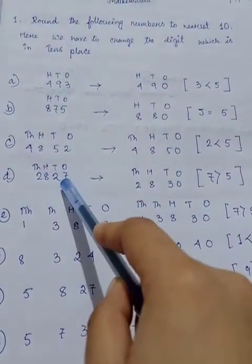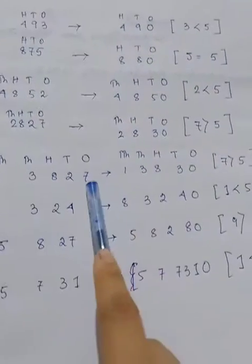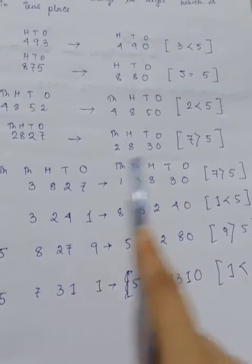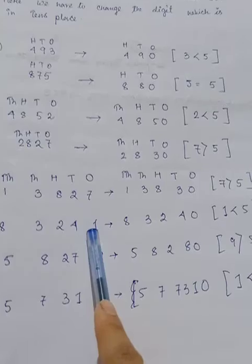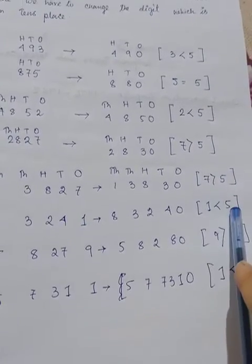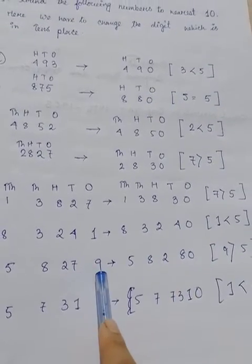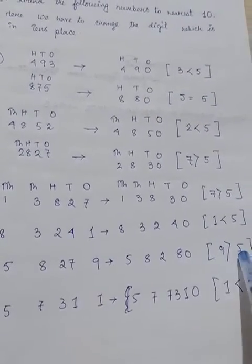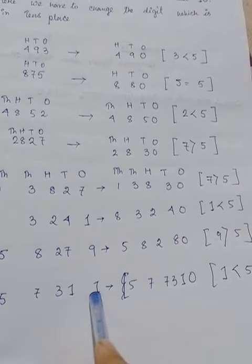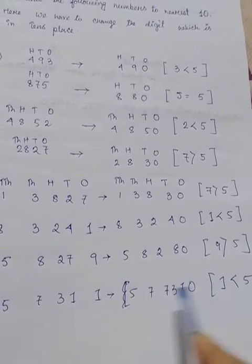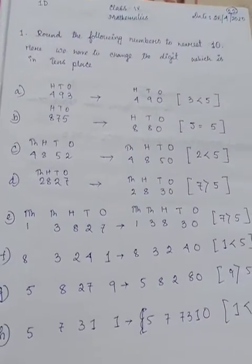Next, 27. Seven is greater than five, so here is two plus one equals three. Next, one is less than five. 479, nine is greater than five, so seven will change to eight. 31, one is less than five, so no changes here in tens place. Understand? Thank you.